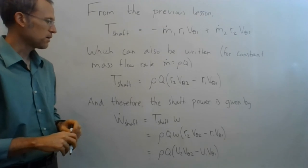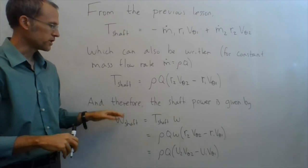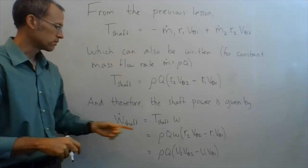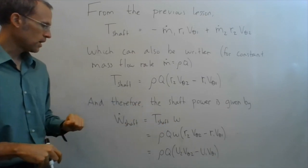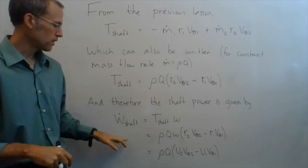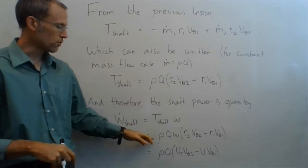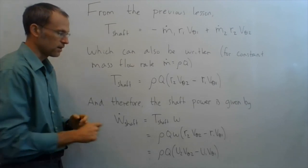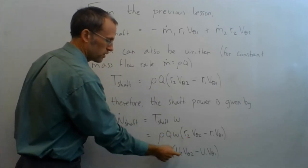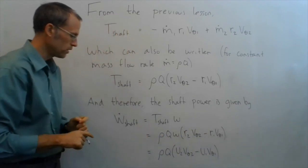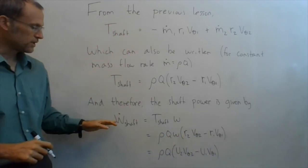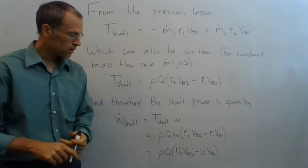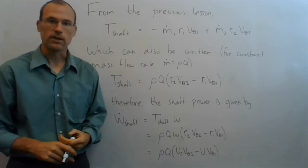And then to find the shaft power, shaft power is just the torque times the angular velocity, so shaft torque times omega, so multiply this guy by omega, my shaft power is rho q omega r2 V theta 2 minus r1 V theta 1, and then using the fact that r2 omega is u2, and r1 omega is u1, shaft power, density times flow rate, rho times q, u2 V theta 2 minus u1 V theta 1.